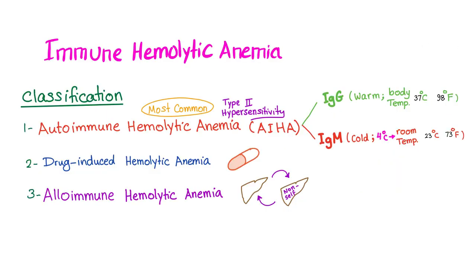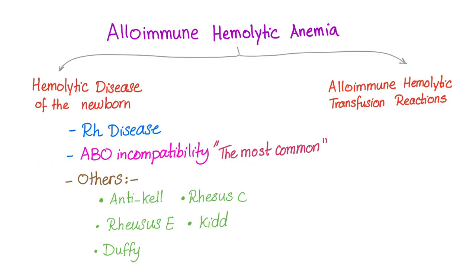Immune hemolytic anemia has three subtypes: autoimmune hemolytic anemia — the most common, warm or cold — drug-induced hemolytic anemia, and alloimmune hemolytic anemia, which is our topic now. Alloimmune hemolytic anemia is further subdivided into hemolytic disease of the newborn and alloimmune hemolytic transfusion reaction. Here we have RH disease and ABO incompatibility. To understand RH disease, let's understand the RH system.